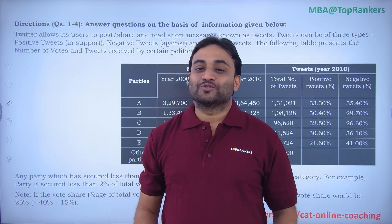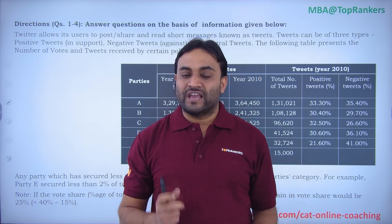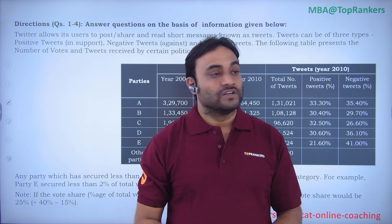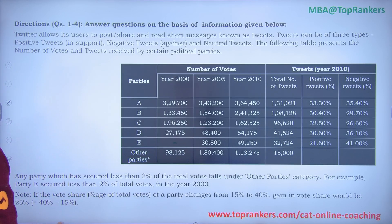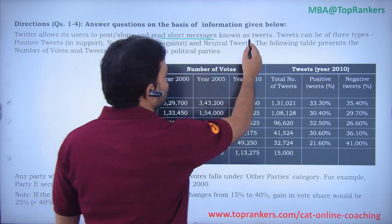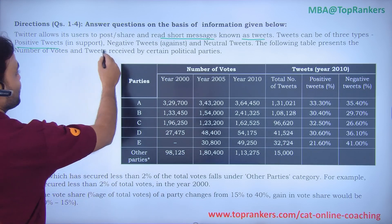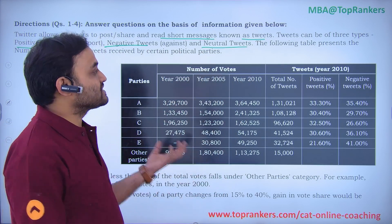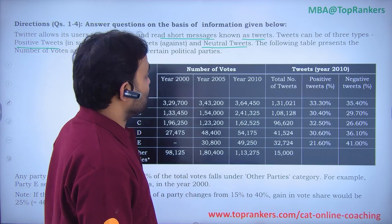Hello friends, welcome to SuperGrads. Today I am going to discuss a very calculation-intensive set from previous years. This set is regarding Twitter — it says Twitter allows its users to post, share and read short messages known as tweets. Tweets can be of three types: positive tweets in support, negative tweets against, and neutral tweets.